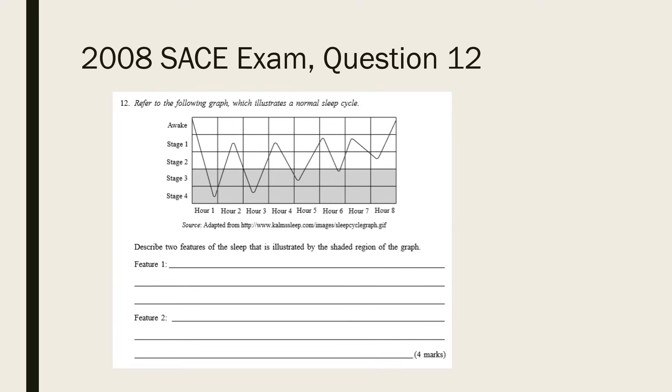Let's look at one final question. Pause the video one more time. This is a simple knowledge and understanding question where each feature is worth two marks. As you have to describe features from the shaded area they have to relate to stages 3 or 4. Therefore you could describe any of the characteristics of slow wave sleep outlined earlier. EEG pattern, heart and respiration rates, muscle tone, body temperature, repair and restoration.